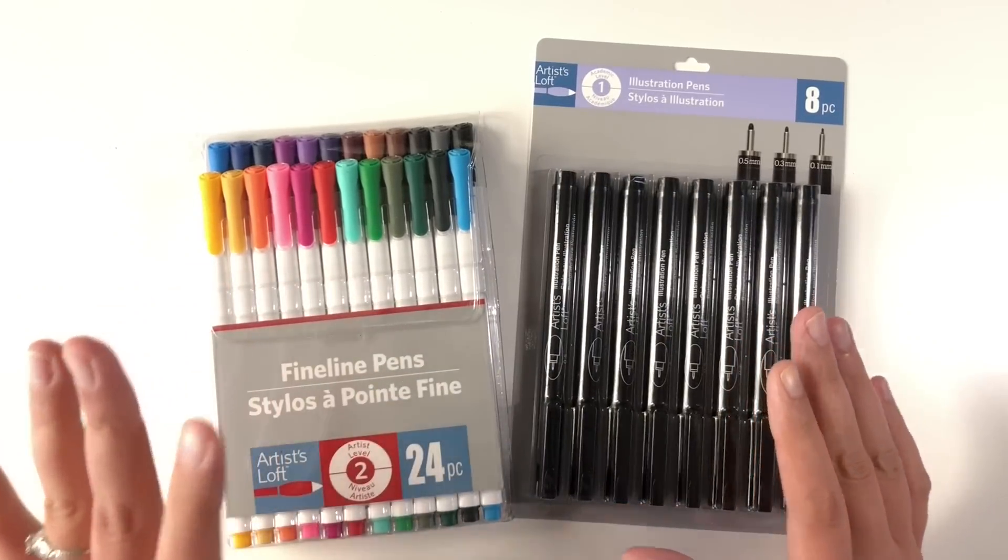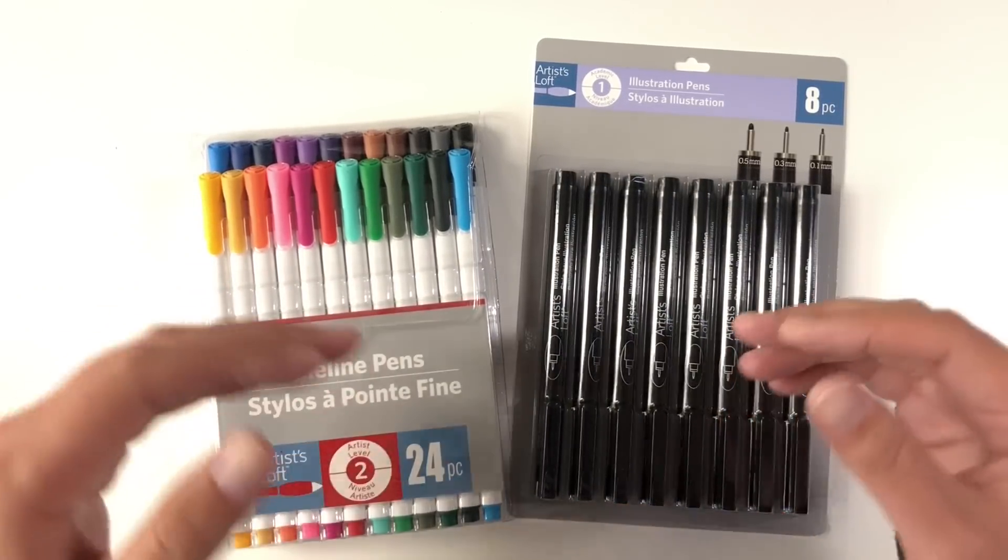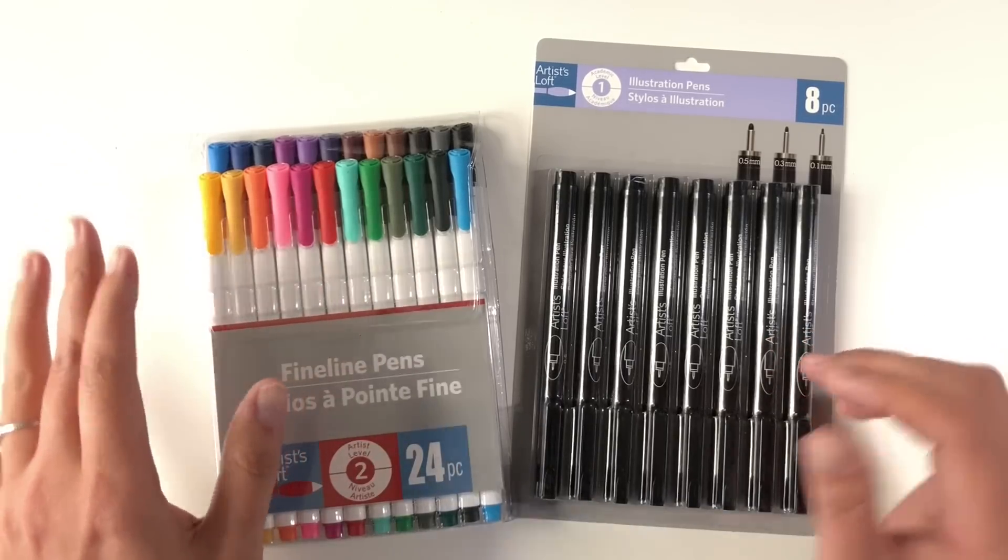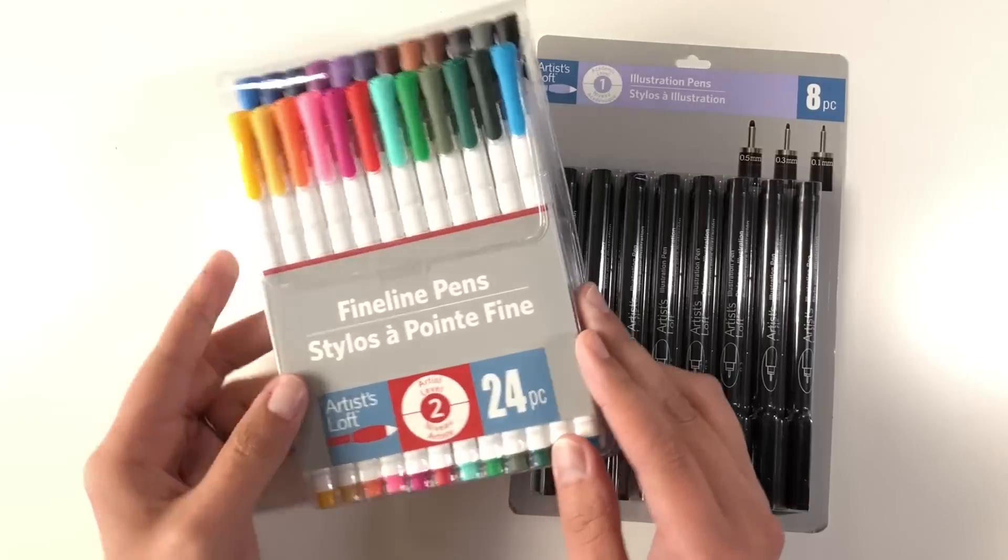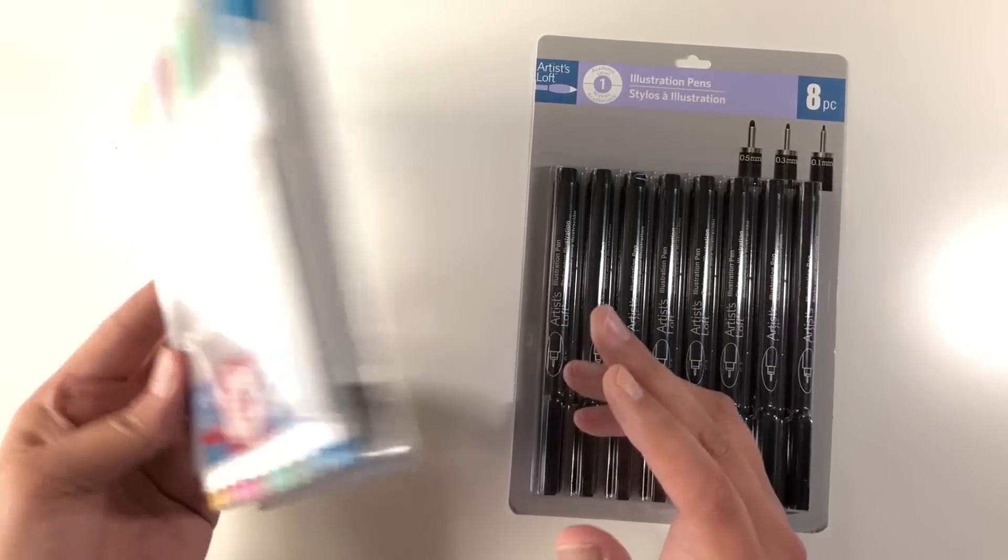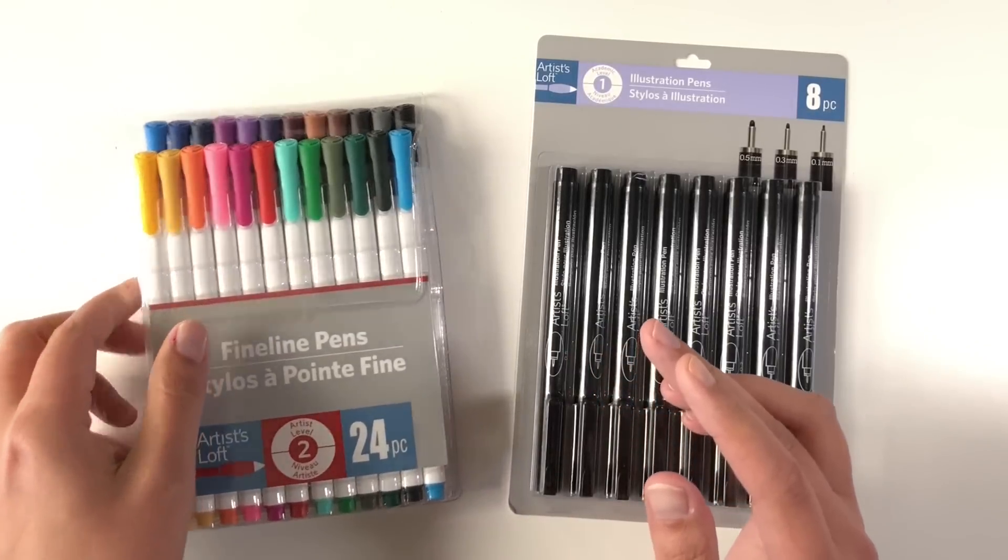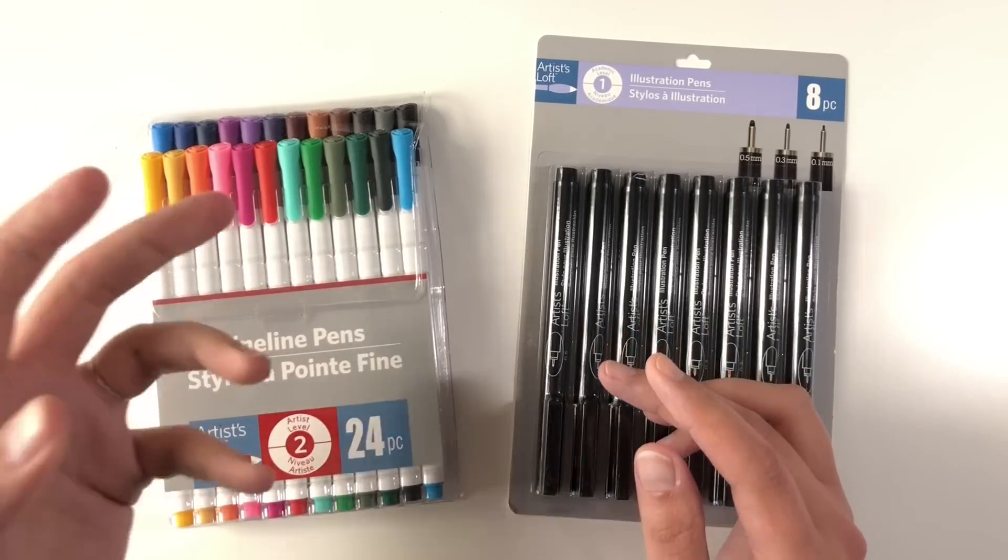Now, these pens are similar to other fineliners that are out there. These fineline pens here, which are colors, there's a 24 pack of them and they are a 0.4 millimeter tip, look very comparable to like a Stabilo or a Staedtler.